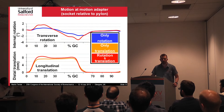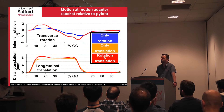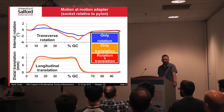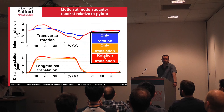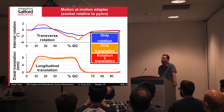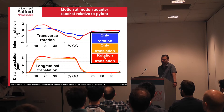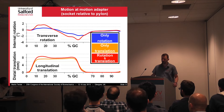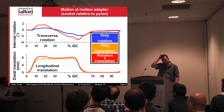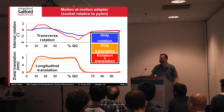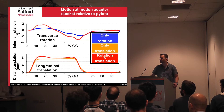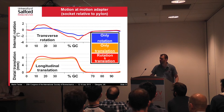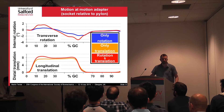Here are the results regarding motion at the motion adapter. The top diagram shows transverse rotation, the bottom shows longitudinal translation. The red line is the output when both motions were combined — in both cases there was greater transverse rotation and greater longitudinal translation when both motions were permitted simultaneously. The pattern of transverse rotation showed the socket rotating internally during stance, then externally during the second half of stance, possibly representing some of the pelvis transverse rotation. The longitudinal translation output was more M-shaped, possibly reflecting the M-shaped vertical ground reaction forces.